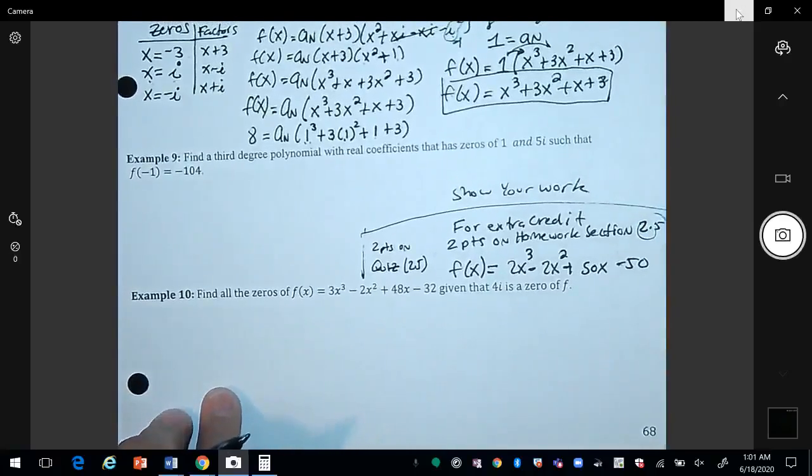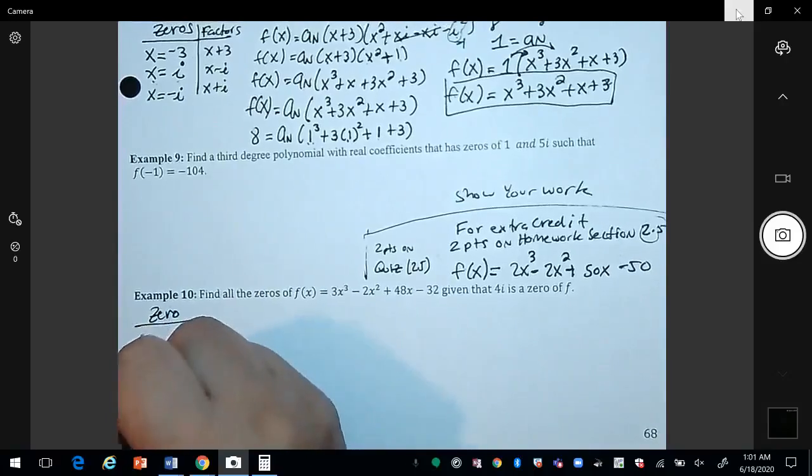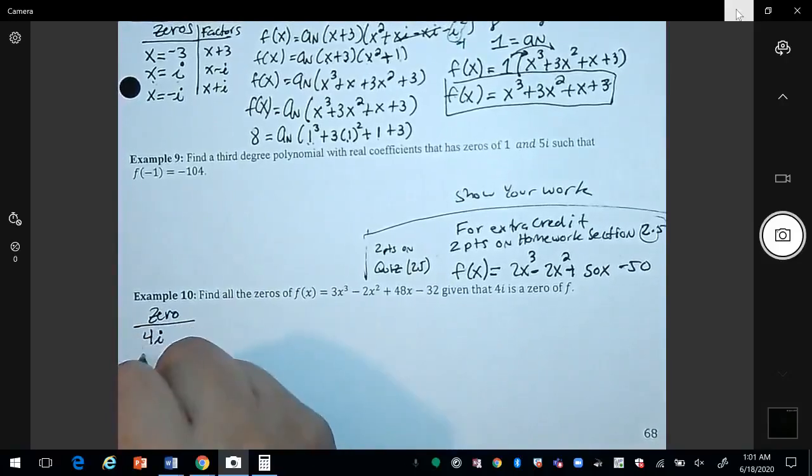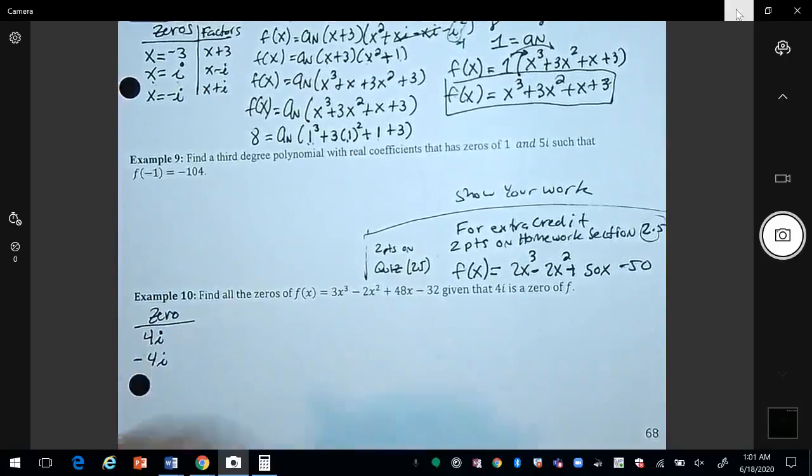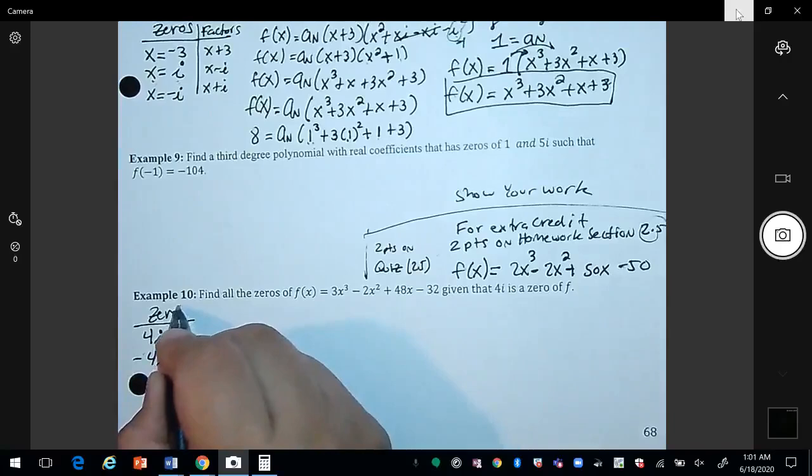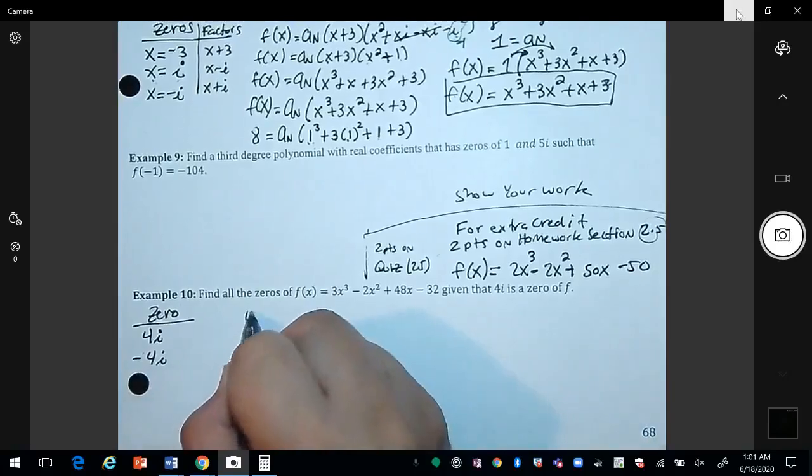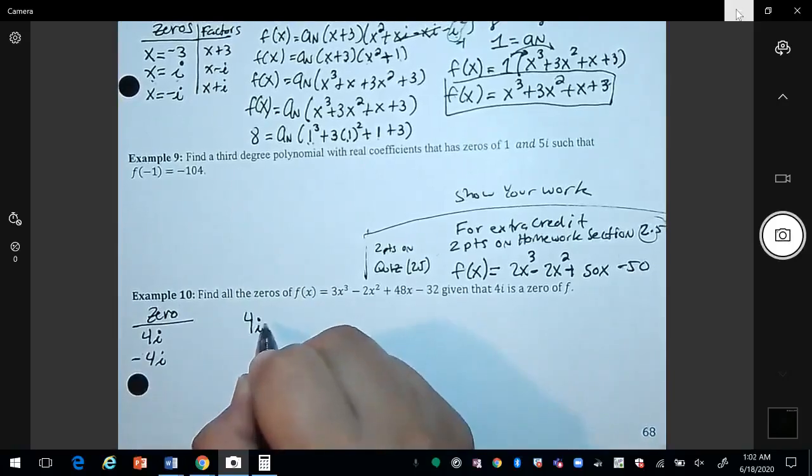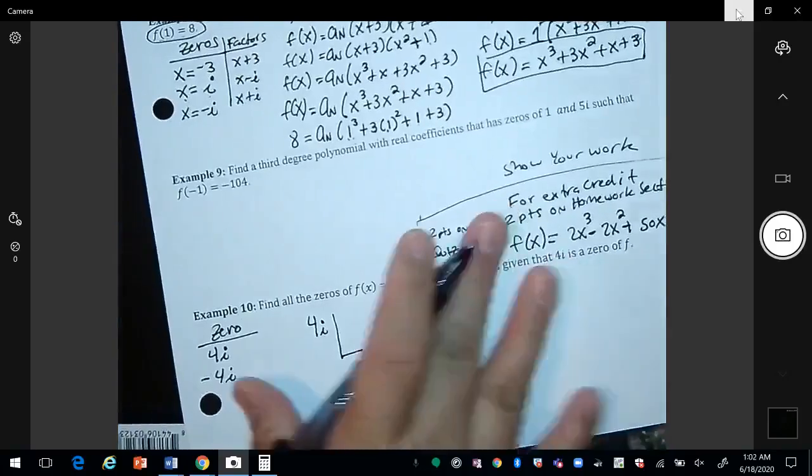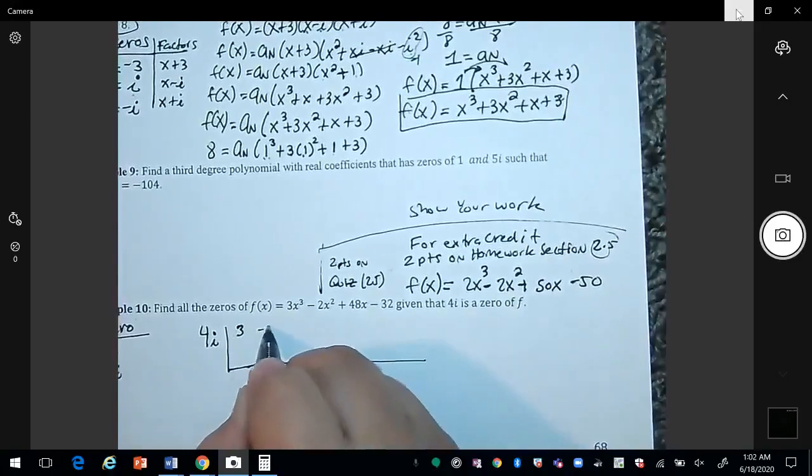Okay, example 10. Find the zeros of f(x) given that 4i is a zero. So here they tell me that 4i is a zero, so that means that the conjugate is also a zero, negative 4i. Since 4i is a zero, then what I can do is I can use synthetic division. So my coefficients are 3, negative 2, 48, negative 32.